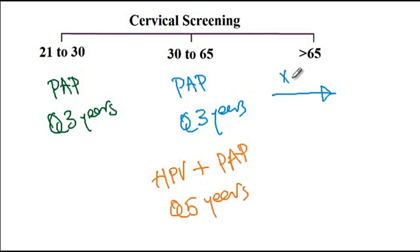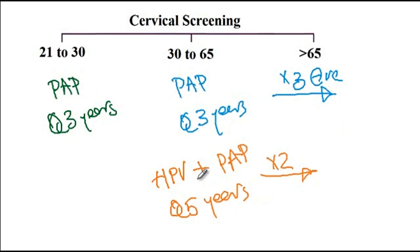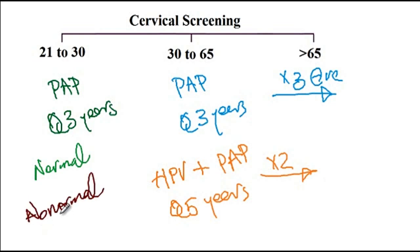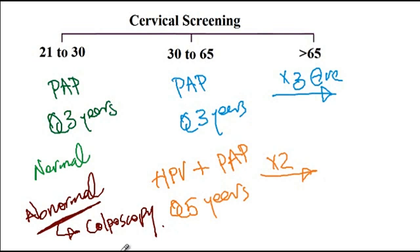After age 65, if there are 3 consecutive negative pap smears, or alternatively 2 consecutive negative co-tests in the past 10 years, screening is no longer needed. These guidelines assume all prior tests were normal. If any test is abnormal, additional workup is required — such as repeat co-testing or colposcopy. The algorithm for abnormal results is beyond the scope of this video but is important for Step 2 and Step 3 exam preparation. That concludes our discussion of HPV infection and cervical cancer.